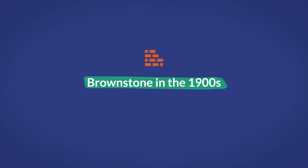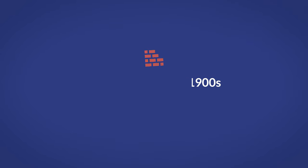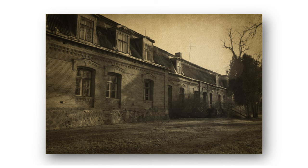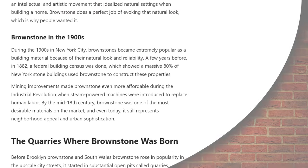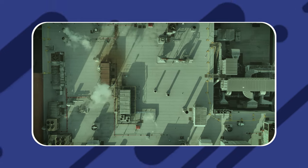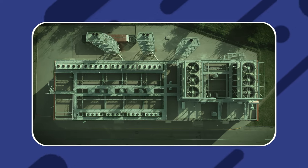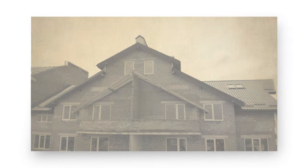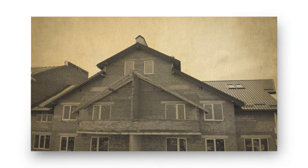Brownstone in the 1900s. During the 1900s in New York City, brownstone became extremely popular as a building material because of its natural look and reliability. In 1882, a federal building survey showed that a massive 80% of New York's stone buildings used brownstone. Mining improvements made brownstone even more affordable during the Industrial Revolution when steam-powered machines were introduced to replace human labor. By the mid-19th century, brownstone was one of the most desirable materials on the market, and even today it still represents neighborhood appeal and urban sophistication.